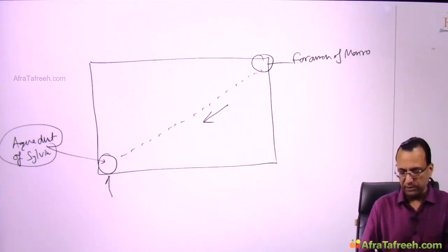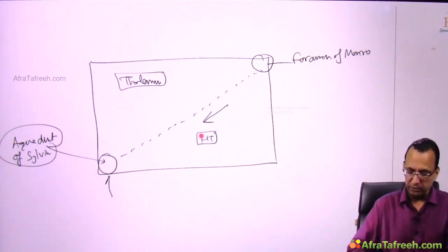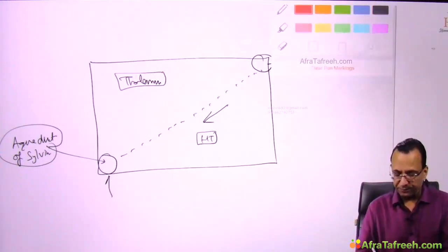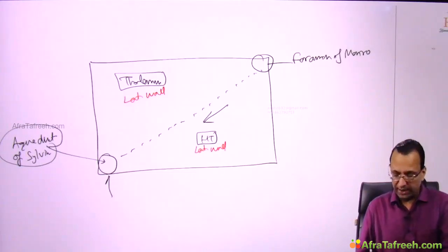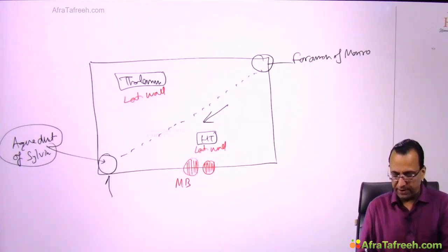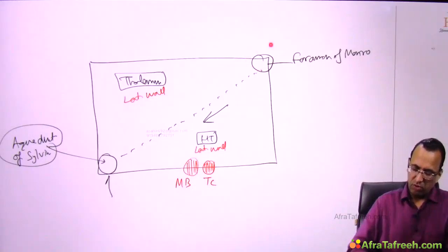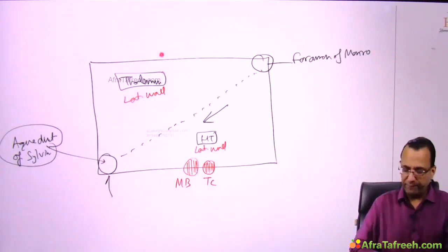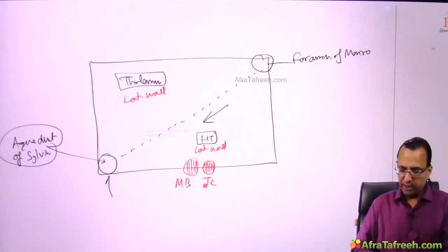The CSF runs downward, separating the thalamus above and the hypothalamus below. Both the thalamus and hypothalamus are the lateral wall of the third ventricle. The thalamus is the lateral wall; the hypothalamus is not only the lateral wall but also the floor, contributing the mammillary body and the tuber cinereum — both parts of the hypothalamus.